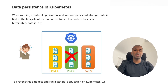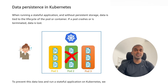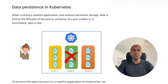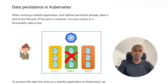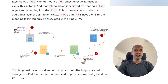Let's take an example: MySQL data. You are saving data to the database and you want that data to persist, but when the pod gets destroyed, the data gets destroyed. That's when persistent volume comes in to solve this issue. Let's see in this picture how persistent volume and persistent volume claim work.